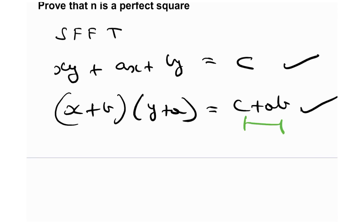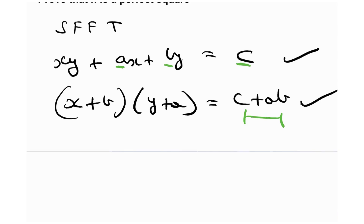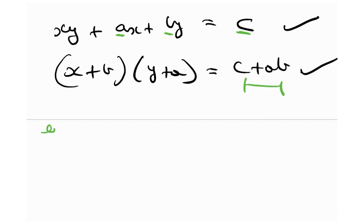Why this is so potent is because on the right-hand side you get a constant. Since a, b, and c are constants — integer values given in the question — you get an integer on the right-hand side. Once you have (x + b)(y + a) equal to an integer, you can just make cases and find the values of x and y.